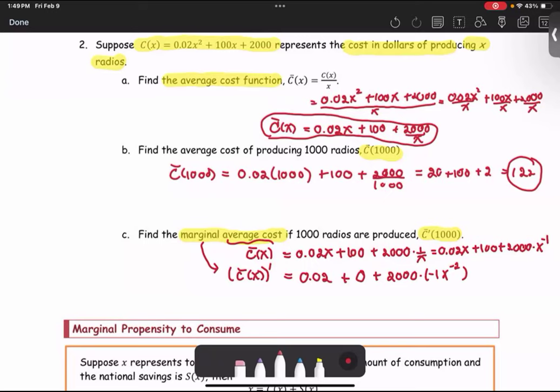We rewrite in simplified form to get 0.02 minus 2000x^(-2), or 0.02 - 2000/x². So this is the marginal average cost function.